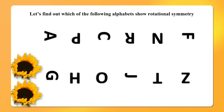You can find out symmetry by taking other alphabets not given here — turn them and find out whether they show rotational symmetry or not. You can also take some numbers like 1, 2, 3, 4, 5, 6, 7, 8, 9, 0. Turn them either a quarter turn, half turn, or three-quarter turn. In some cases you will find rotational symmetry and in some you will not. So practice, my dear friends — the more you practice, the better you will understand rotational symmetry.